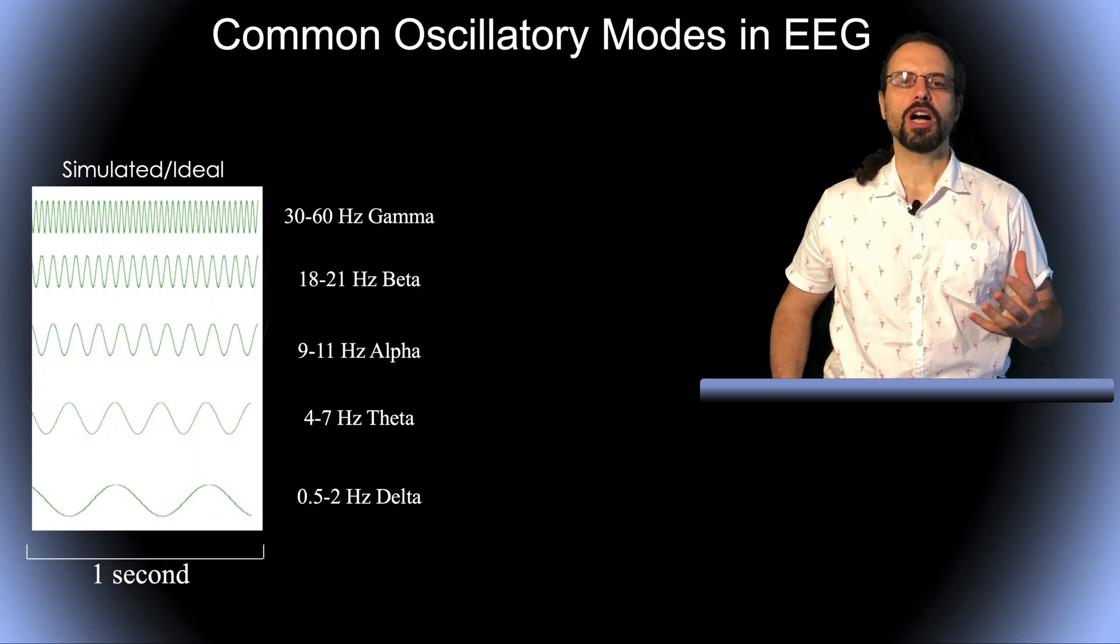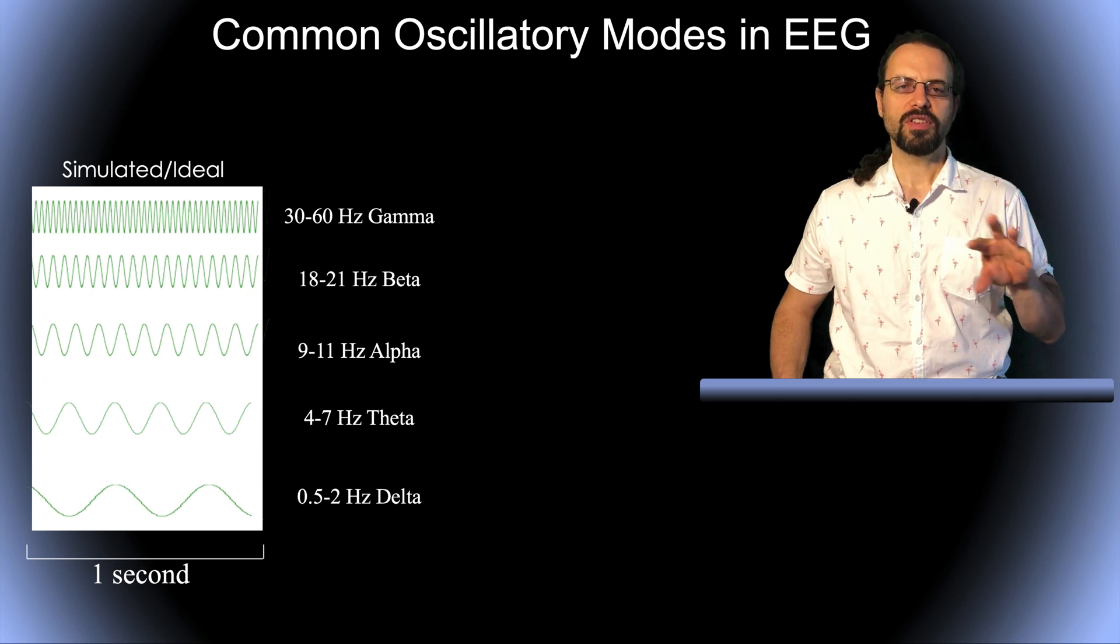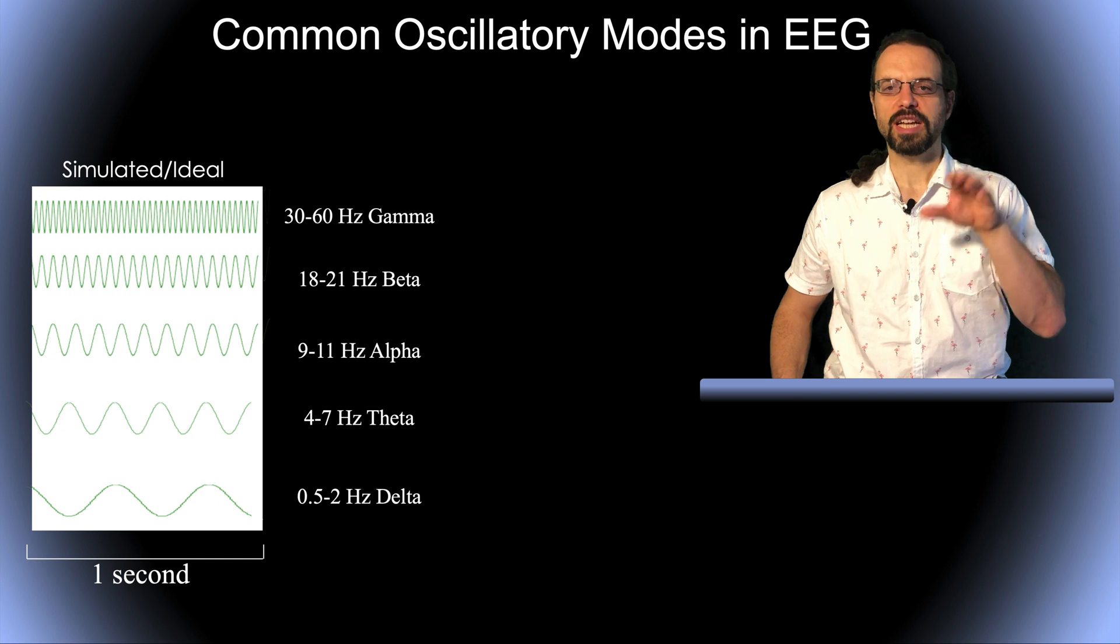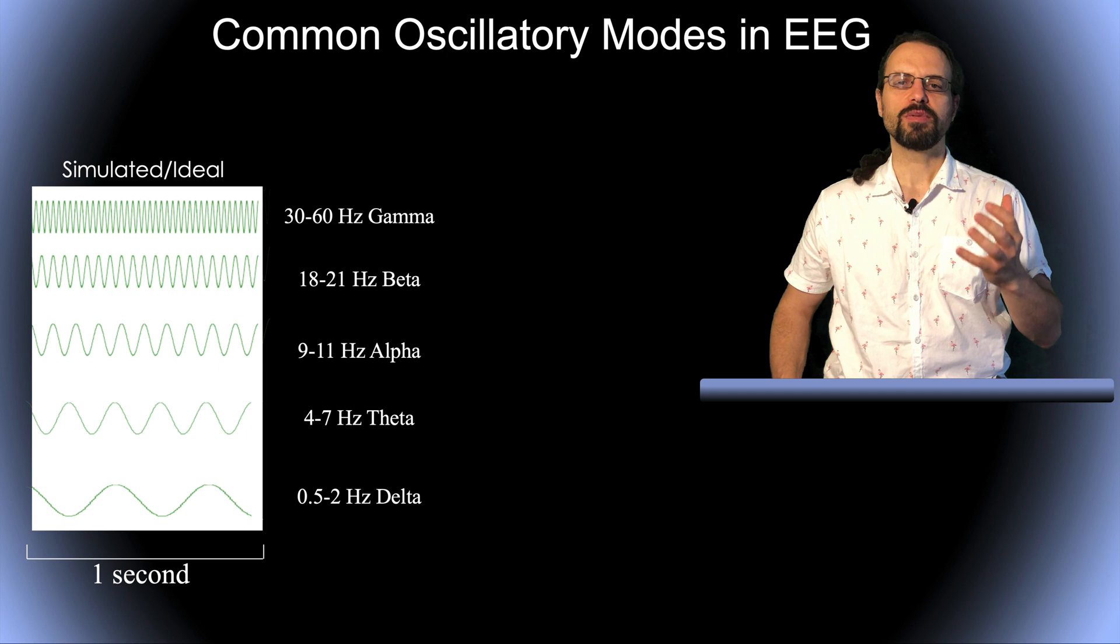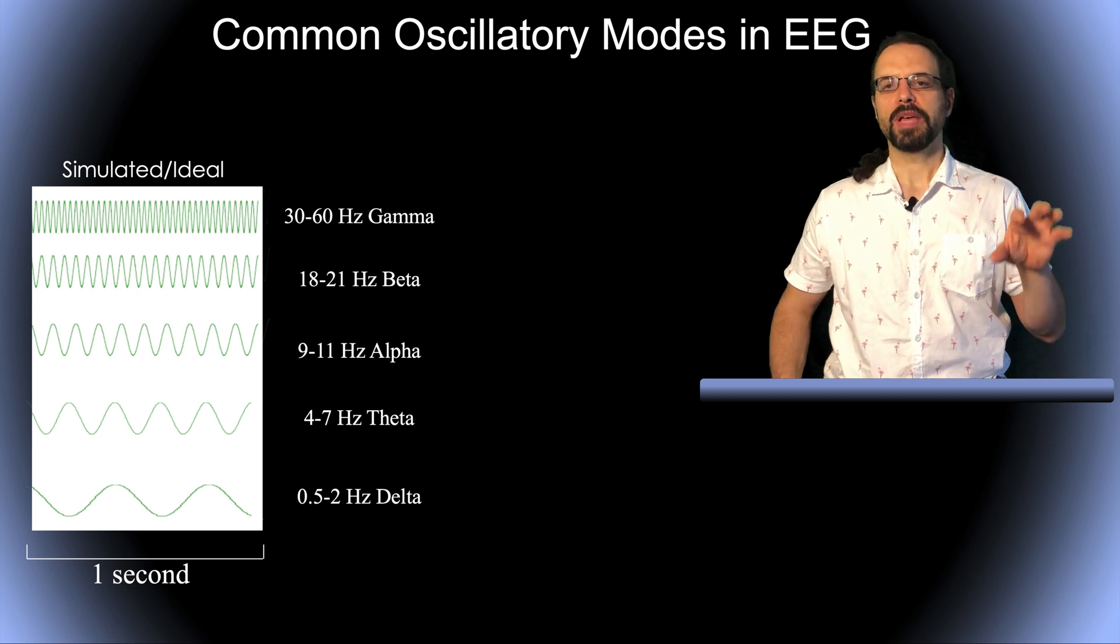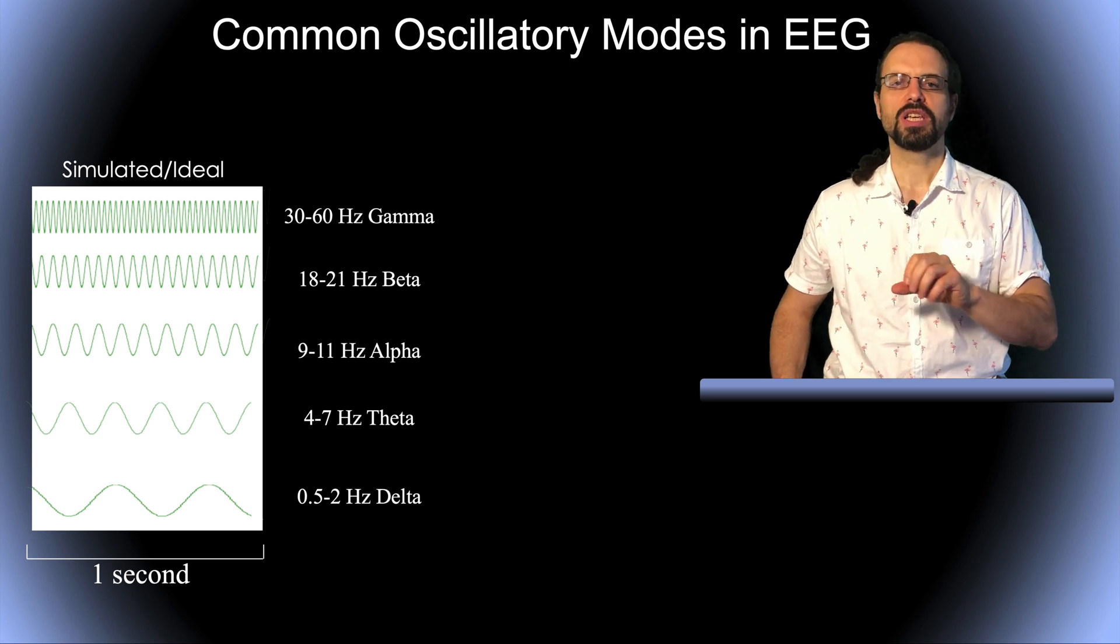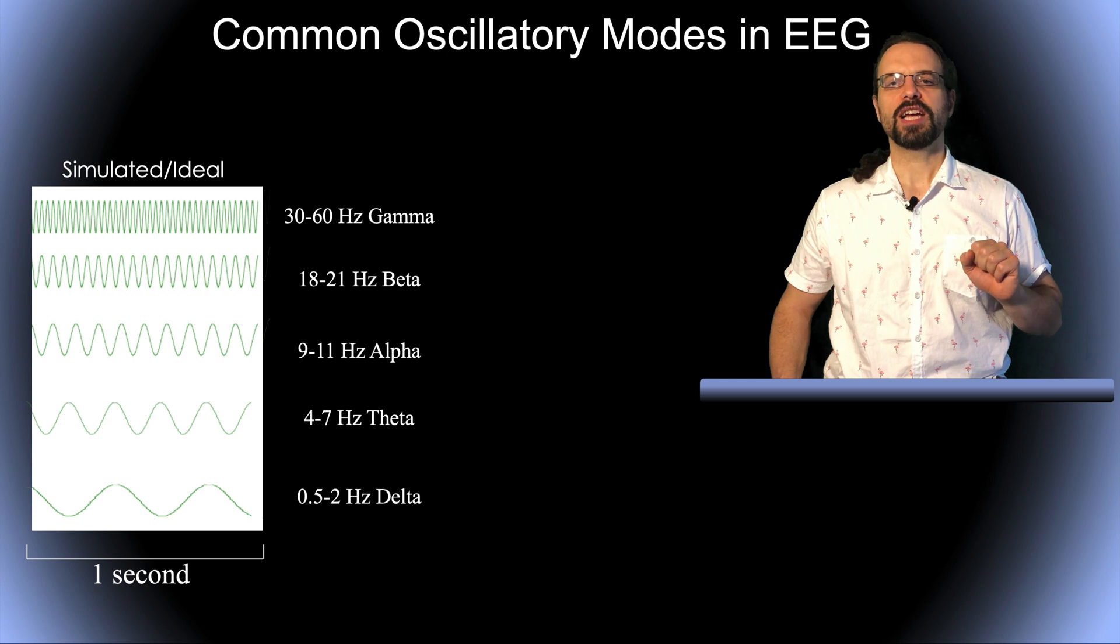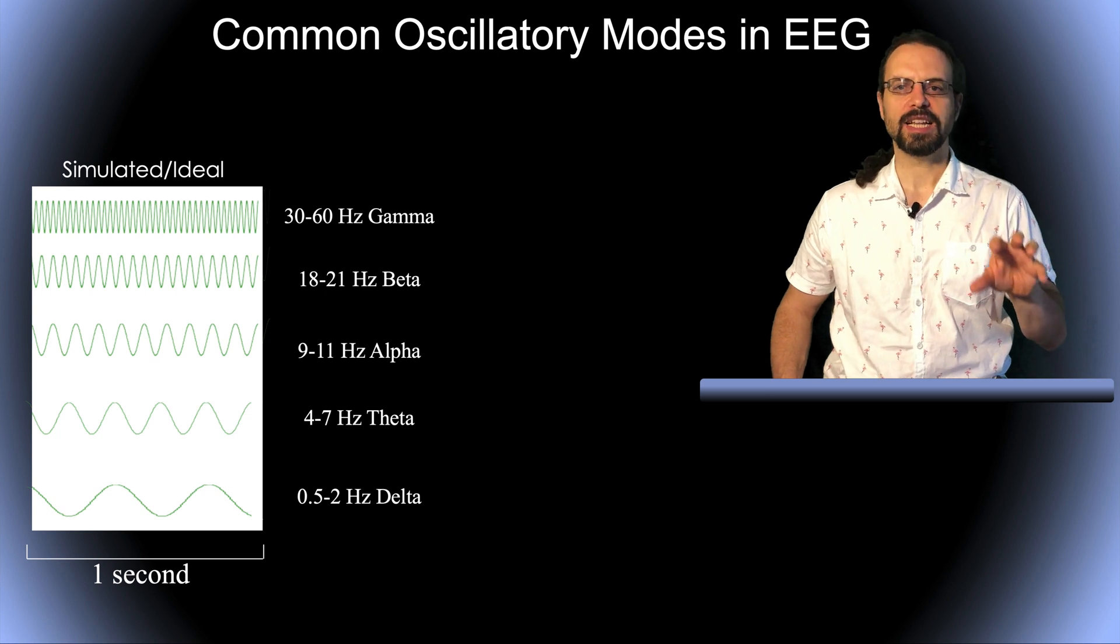So you may have heard of common oscillatory modes of the EEG signal. This is simulated ideal data and these are sinusoids at different frequencies. We typically define the alpha EEG rhythm as rhythm from 9 to 11 Hz, and then beta from 18 to 21 Hz, gamma from 30 to 60 Hz. Then we have the lower frequencies with theta from 4 to 7 Hz and delta from 0.5 to 2 Hz. These are, of course, idealized signals.